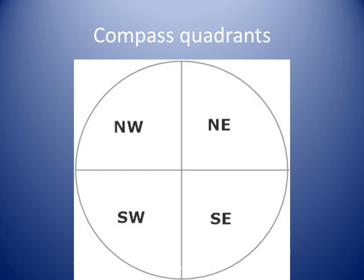Especially if the area is circular. The area can be divided into quadrants named after the intercardinal points.